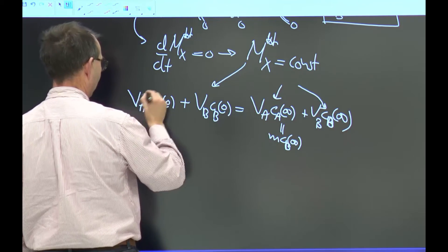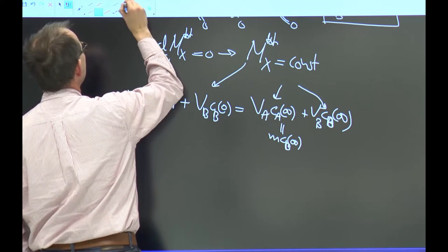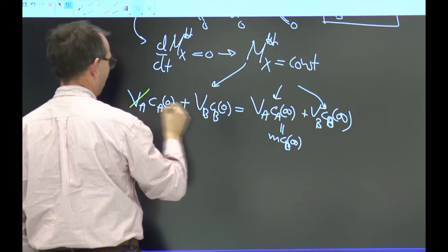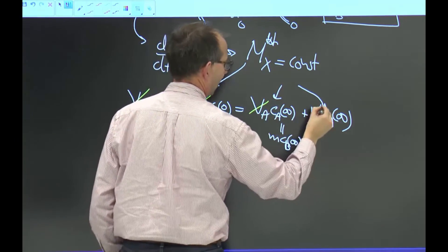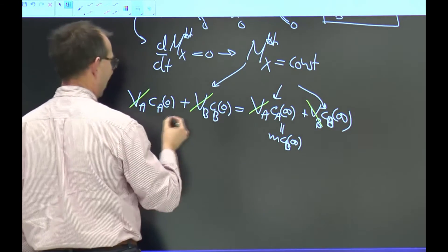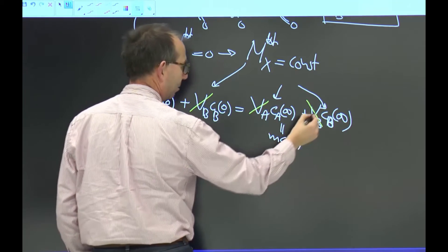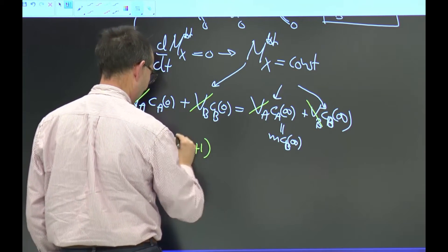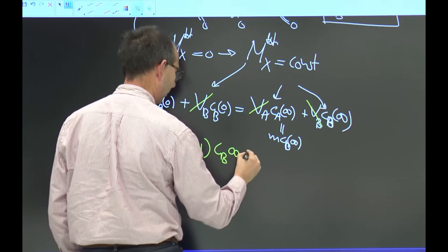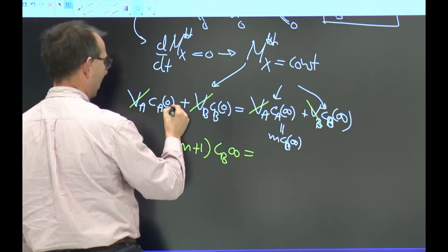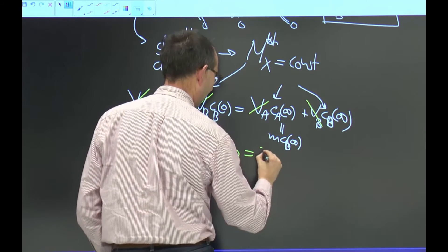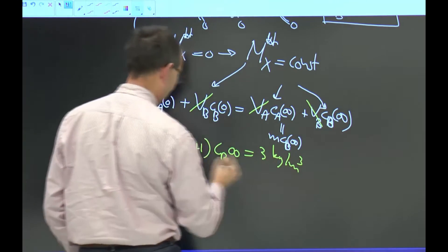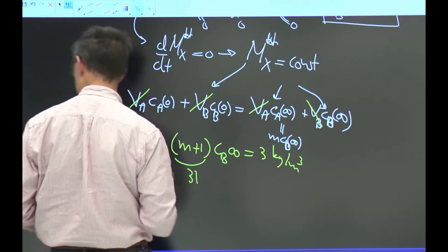The volumes are the same, so I can scratch them out. I'll do that in yellow so that you can see what I'm doing. The volumes are the same. I just choose the system such. You can make any other choice. And thus, I get M plus one times CB infinity equals CA zero plus CB zero, which was three kilogram per cube. This is 31.